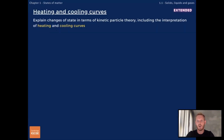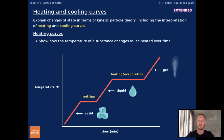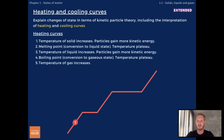Now apply what you've learned about changes of state and kinetic particle theory to heating and cooling curves. A heating curve shows how the temperature and state of a substance like water changes as it's heated over time. This one begins with ice at a temperature below its melting point, below zero degrees Celsius. As the ice is heated, temperature gradually increases until it reaches its melting point at zero degrees. The line is horizontal there, showing that the temperature doesn't change until all the ice has melted — particles gain no more energy until all the attractions holding them in the solid state are overcome.